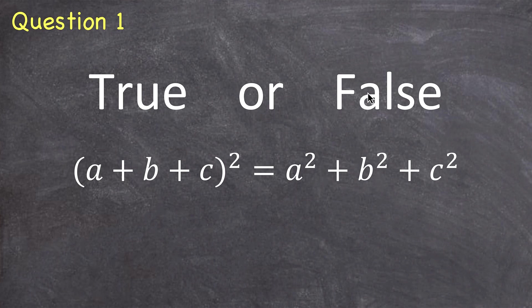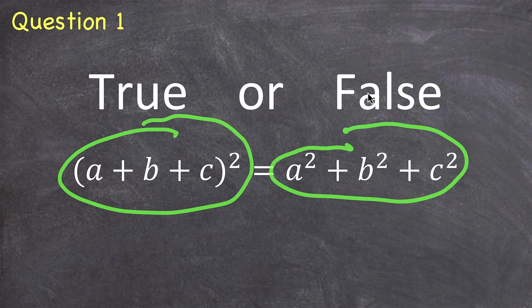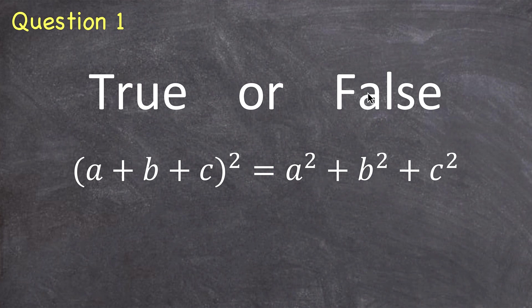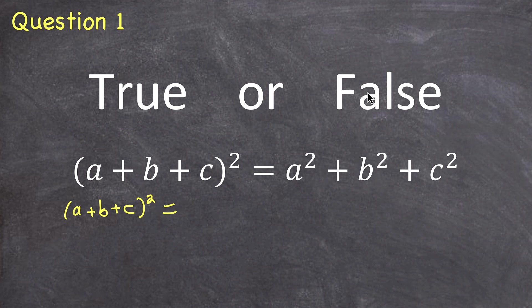Question 1. True or false? A plus B plus C, all being squared, is equal to the sum of the squares of A, B, and C. Before I give you the answer, let's take a closer look at the left side of this equation. I know that I could rewrite (A+B+C)² as two factors of A plus B plus C being multiplied together.